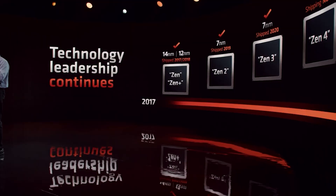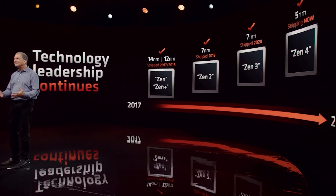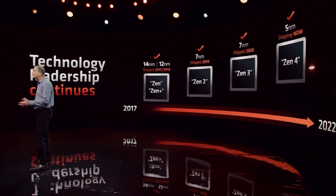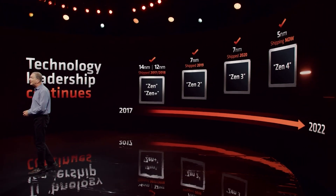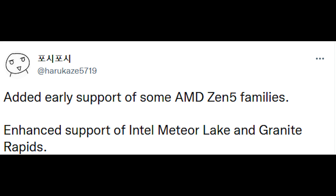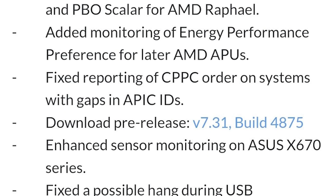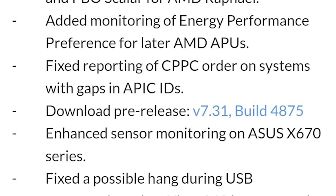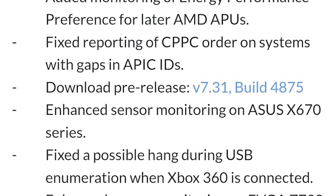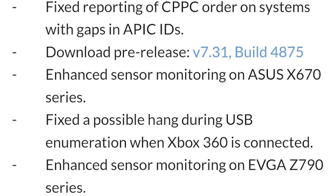Speaking of interesting ones, HWinfo has already got early support for Zen 5, and there are also some updates for other processors. I want to give courtesy credit to Harikazi5719 on Twitter — that's how I initially spotted this. Early support for Zen 5 is kind of amusing, because ultimately Ryzen 7000 and Zen 4 has just launched. It does say this is for Zen 5 families, so it doesn't specify what Zen 5 processors they are.